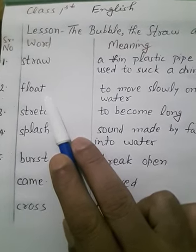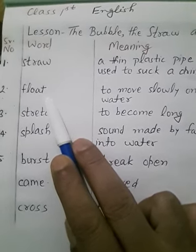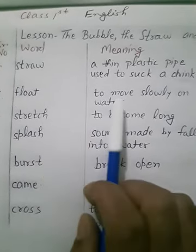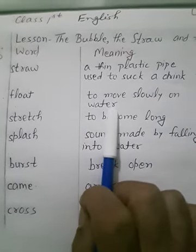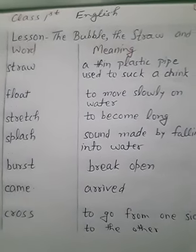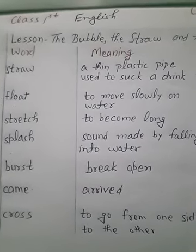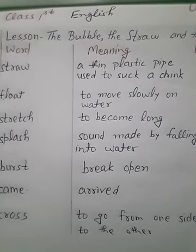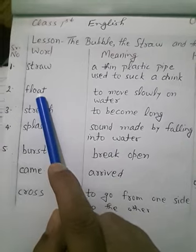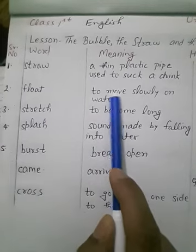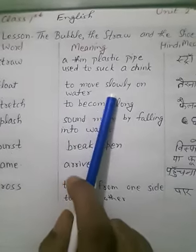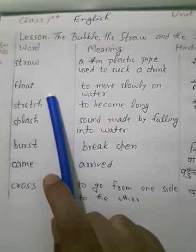Number two is 'float.' Float means to move slowly on water. Paani per dhire dhire chalna — to move slowly on water. Water per slowly slowly move karna — that is float.